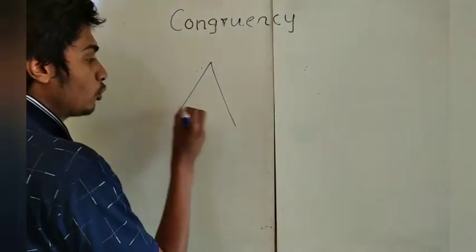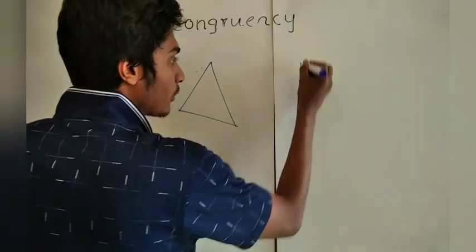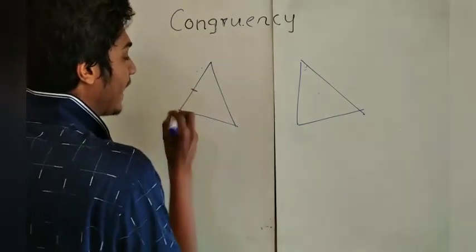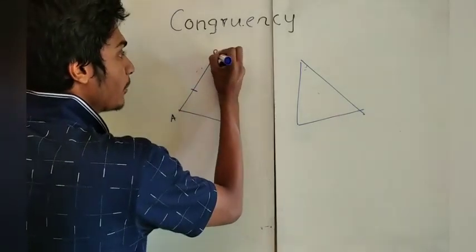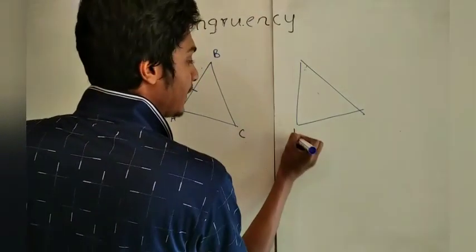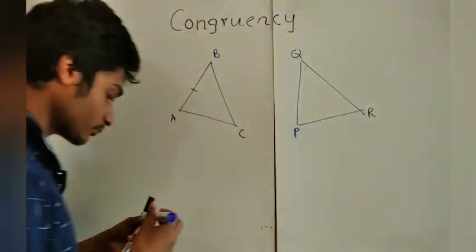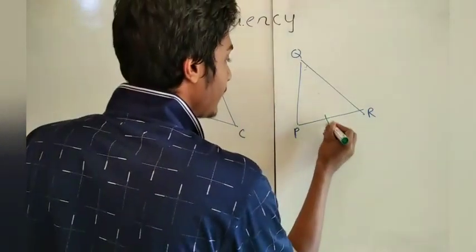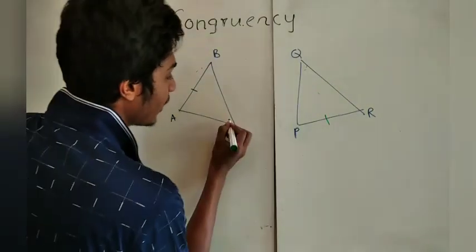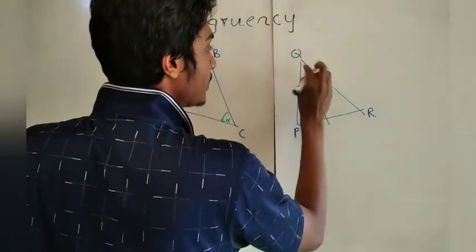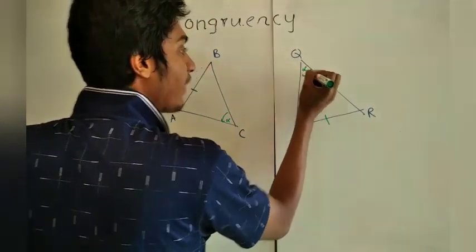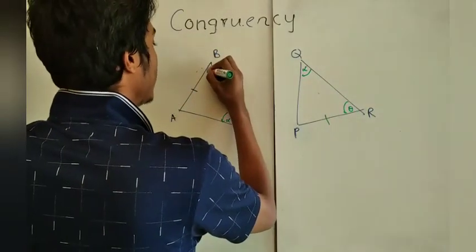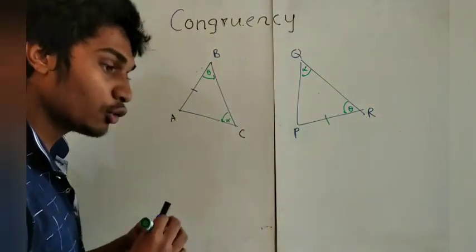Consider two triangles — triangle ABC and triangle PQR. We say AB is equal to PR. Now, straight opposite to side AB there is an angle alpha, and straight opposite to the corresponding side PR there should also be an angle alpha. Let's say there is another angle theta in each triangle as well.